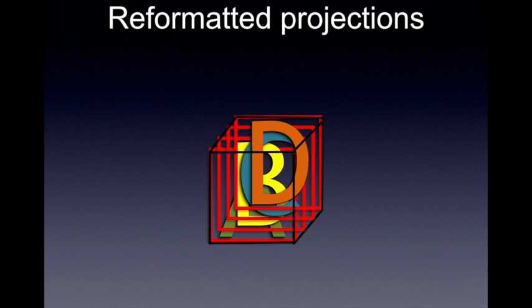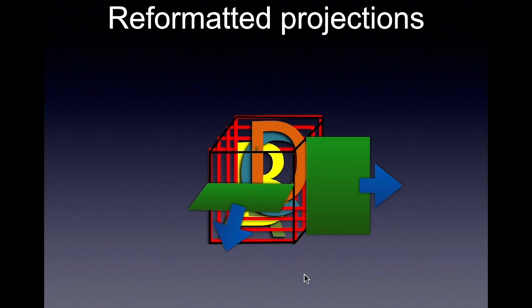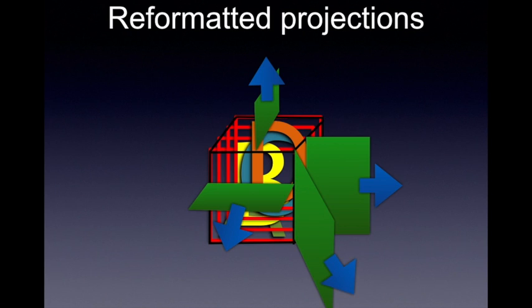With the advent of better computing — faster, stronger, more intelligent computers — we now move into the age of reformatting projections. If you get those slices based on anatomical planes, you have the basic MPR views. But because our computers are now a lot faster and better at computing, they can actually reformat other oblique images. This is very useful particularly when we'd like to get a cross-section of, let's say, our alveolus.